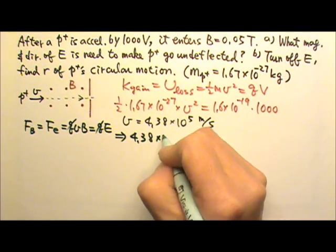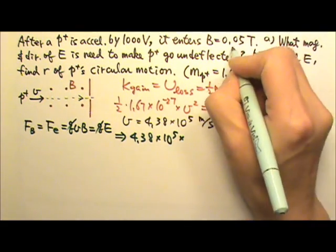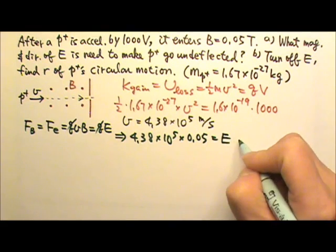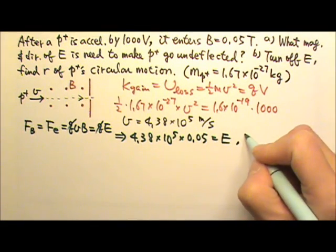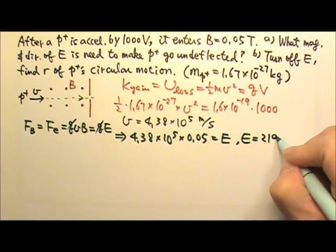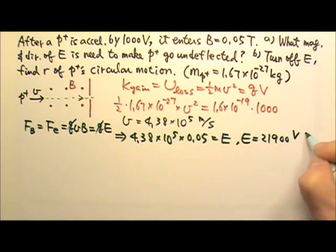4.38 × 10^5 times the strength of the magnetic field, 0.05, would equal the electric field. So the electric field equals 21,900 volts per meter.